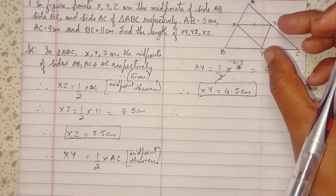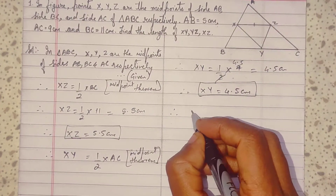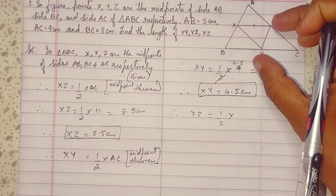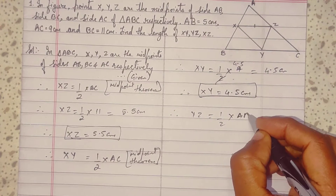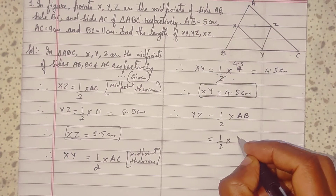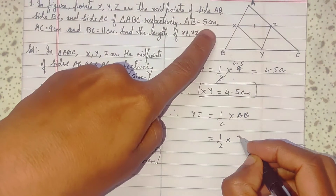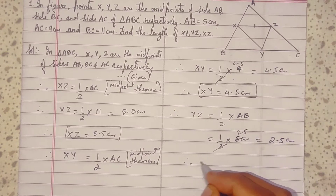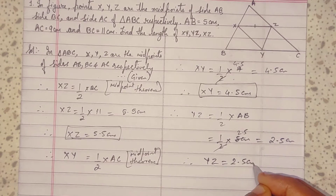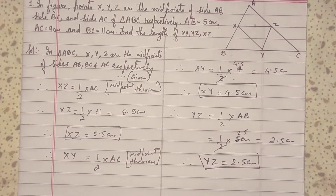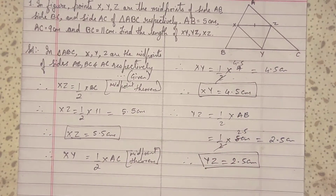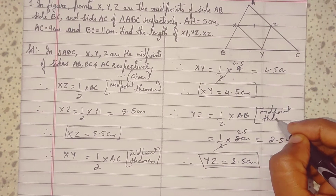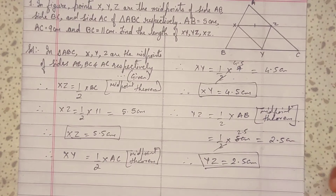For the last one, YZ equals half of AB, which is half of 5, so YZ equals 2.5 cm. All three results follow from the midpoint theorem. Giving the reason — midpoint theorem — is important.